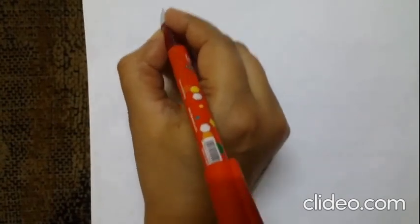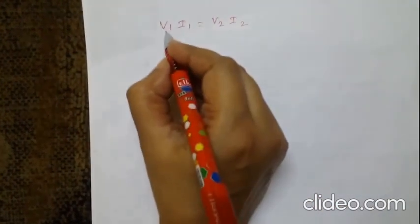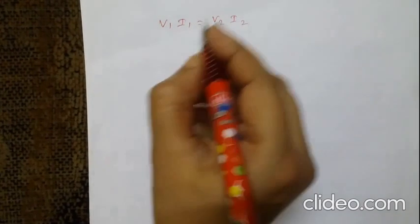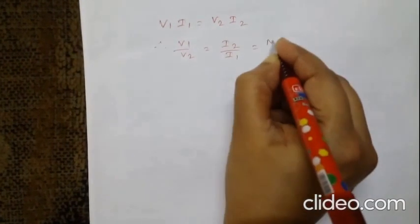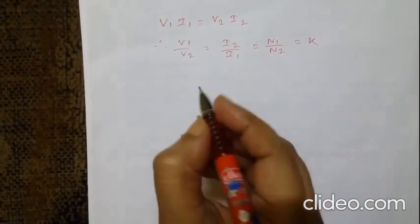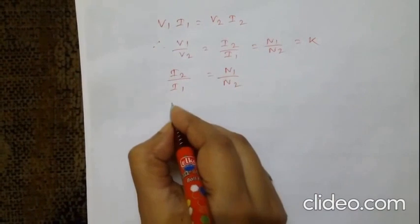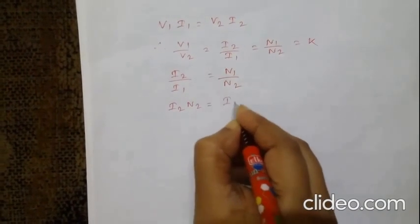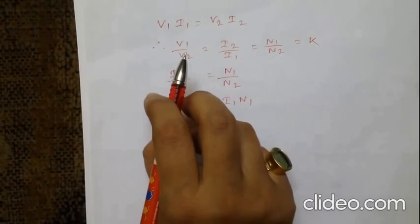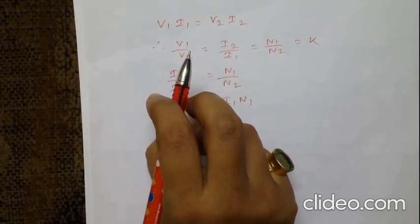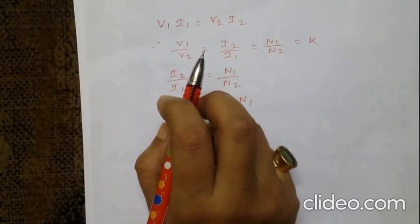We can write V1/V2 = I2/I1, so V1I1 = V2I2, which gives V1/V2 = I2/I1 = N1/N2 = K. Also, I2/I1 = N1/N2, which means I2·N2 = I1·N1. The rating of a transformer is stated in terms of volt-amperes that it can transform without overheating. The transformer rating is either V1I1 or V2I2, where I2 is the full-load secondary current.